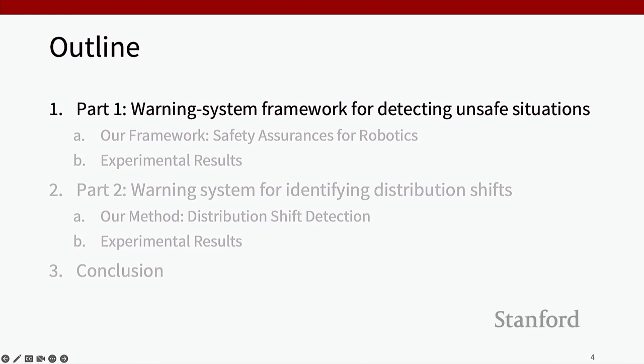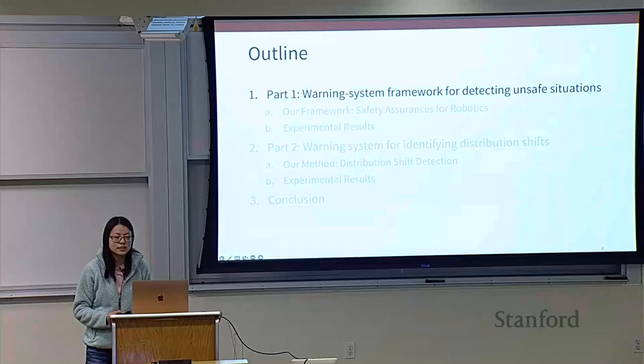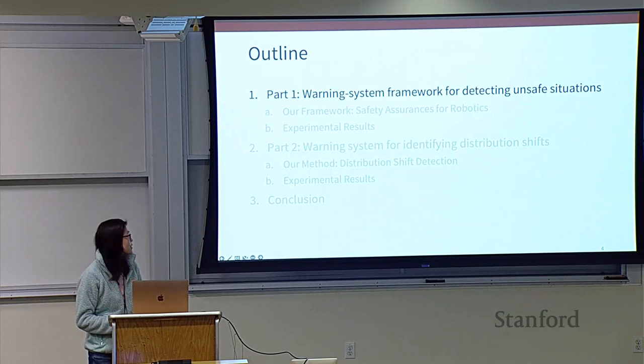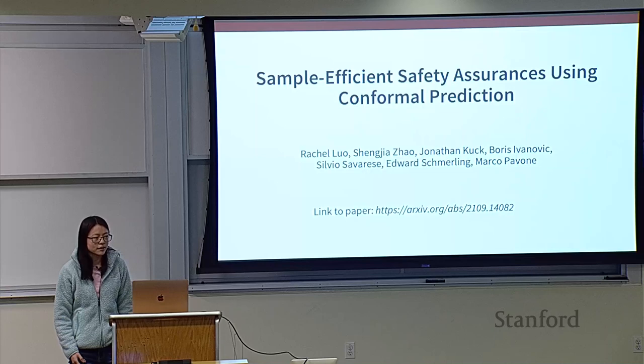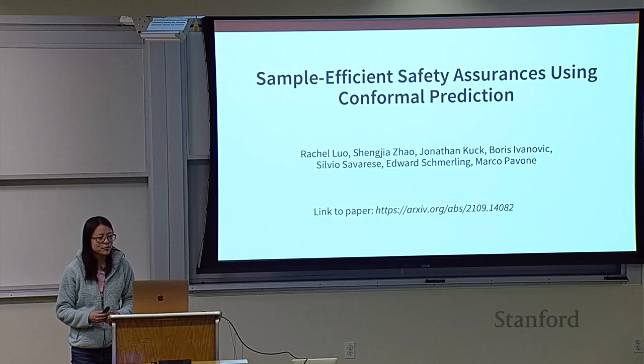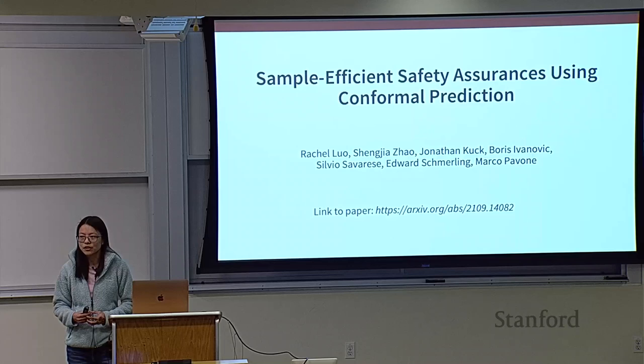I'll start with the warning system framework for detecting unsafe situations. The relevant paper for this part of the talk is called "Sample Efficient Safety Assurances Using Conformal Prediction," and this paper is on arXiv. In this work, we introduce a real-time warning system framework for detecting unsafe situations specifically designed for robotics applications. It can provide safety guarantees even when there's not very much data available.